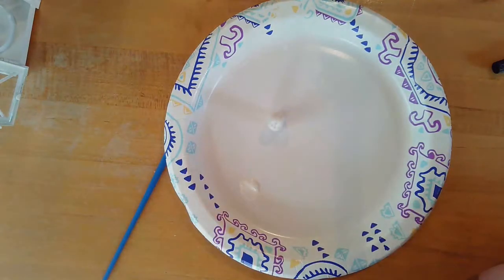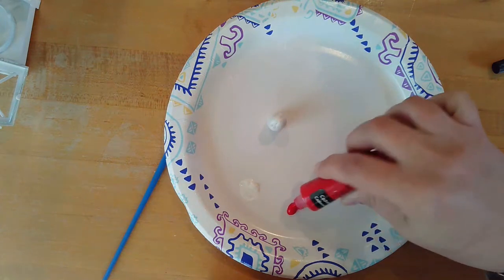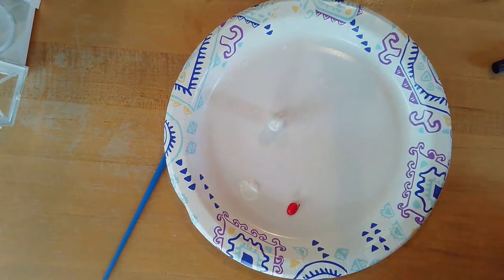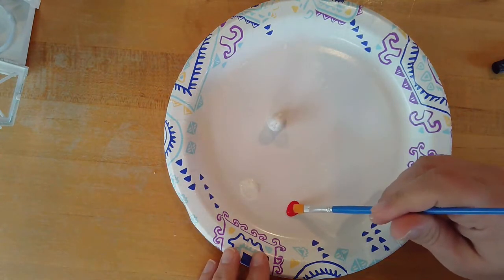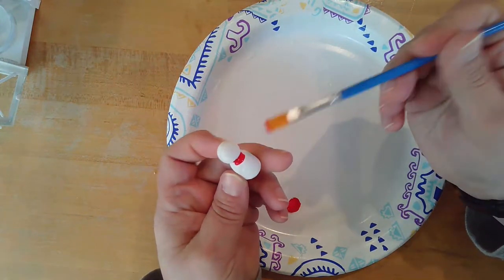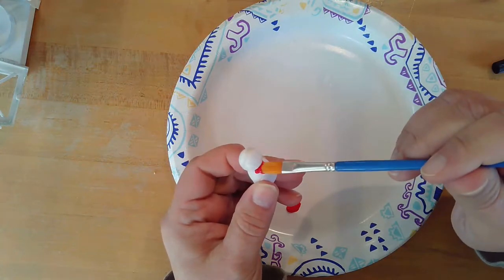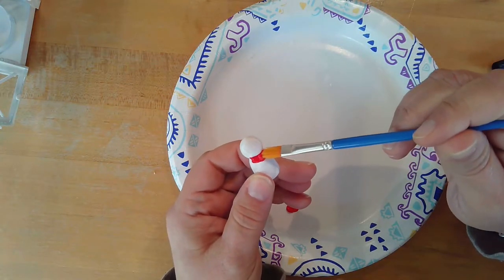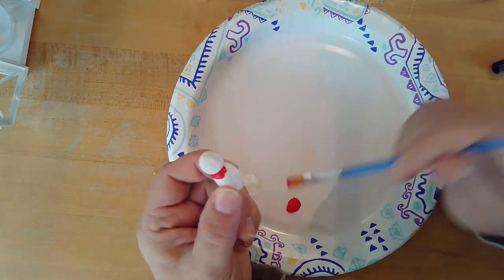My snowman peg is dry, so I'm going to add a red scarf to him. I'm taking my paintbrush, and I'm just dipping the edge into the red paint, and I'm going to go around the neck carefully. Trying to make an even line all the way around the snowman's neck.